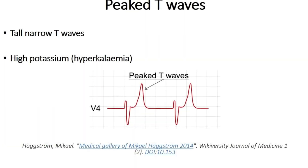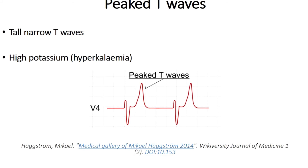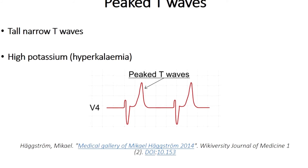Another common ECG abnormality of T waves is peaked T waves. Peaked T waves are tall, narrow T waves seen in patients who have a high potassium level in their blood. One of the key ECG features of hyperkalemia is a peaked T wave.